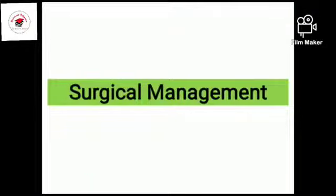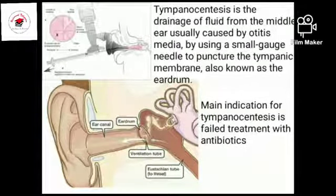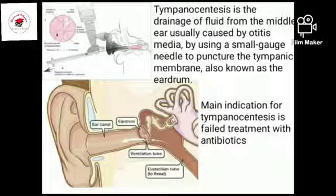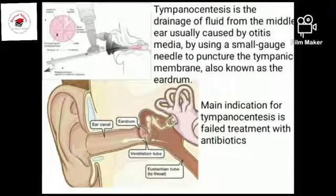Now moving forward to surgical management. The first procedure is tympanocentesis. Tympanocentesis is a diagnostic procedure done without anesthesia. The ear canal is sterilized with isopropyl alcohol or povidone-iodine solution. A needle is inserted through the anterior inferior or posterior inferior portion of the tympanic membrane, and the content of the middle ear is aspirated into a sterile container for identification of microbes and their properties.